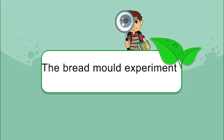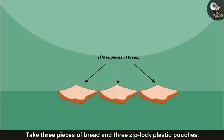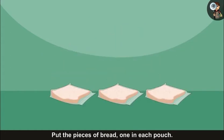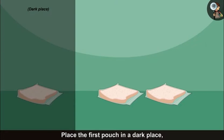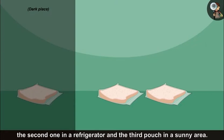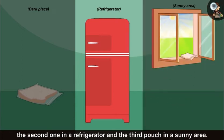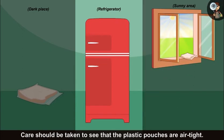The bread mold experiment: take three pieces of bread and three Ziploc plastic pouches. Put the pieces of bread, one in each pouch. Place the first pouch in a dark place, the second one in a refrigerator, and the third pouch in a sunny area. Care should be taken to see that the plastic pouches are airtight.